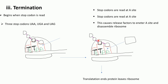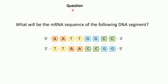This disassembly leads to the end of protein translation — the protein is released from the ribosome. In summary, termination begins when a stop codon is read at the A site; release factors enter the A site, the ribosomal subunits disassemble, and the completed protein is released, ending translation.